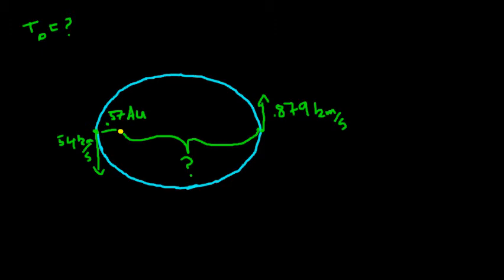We're given the speed that it's going when it's farthest away from the sun, and that's 0.879 kilometers per second. Now, we want to find the time it takes for Halley's Comet to go all the way around. The easiest way to do this is to figure out the distance from the sun to Halley's Comet at its farthest point, add that to the distance at the closest point, divide by 2, and plug that into Kepler's third law.